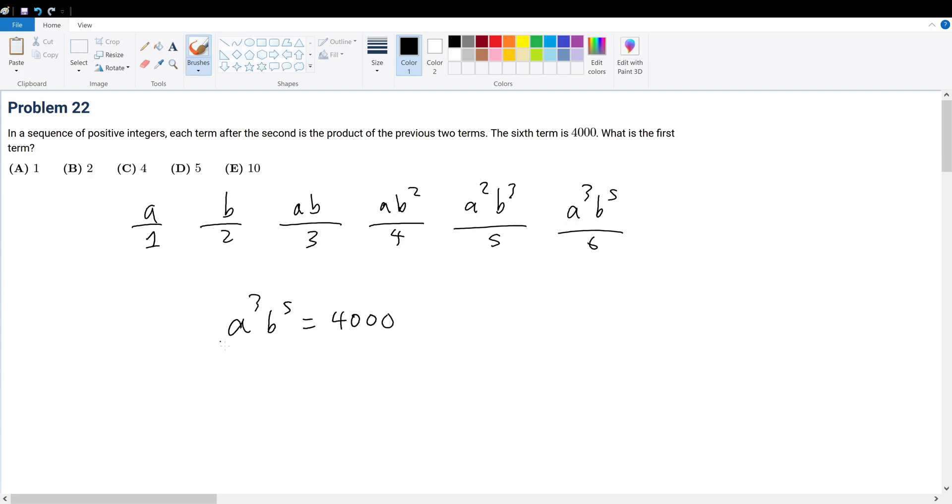Now, when you multiply two terms together and it gets a number, that should be a red flag right away that you must prime factorize. Because prime factorize gives us numbers in this format. So this is equal to 4 times 1000. What is 4 equal to? 4 is 2 squared and 1000 is 10 cubed.